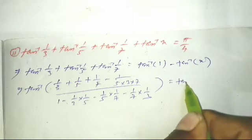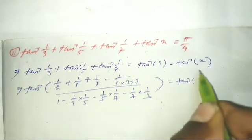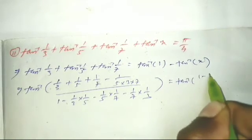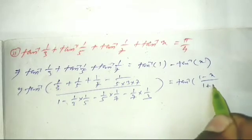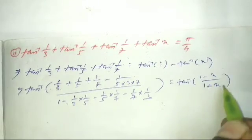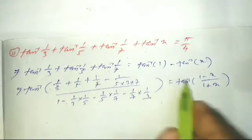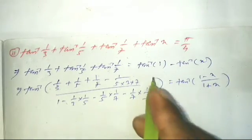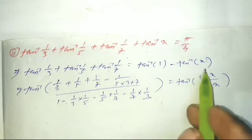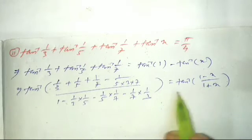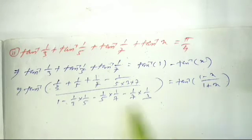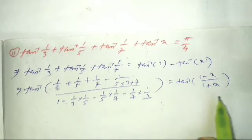Using the formula tan inverse(1) minus tan inverse(x) equals tan inverse of (1 minus x)/(1 plus x), we can simplify. The tan inverse functions cancel, so we just need the argument to equal (1 minus x)/(1 plus x).